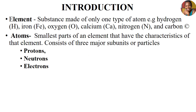The introduction to biochemistry is grounded in basic elements. By elements we mean substances made of only one type of atom, and atoms could be of types such as hydrogen, iron, oxygen, calcium, nitrogen, and carbon. There are different types of elements and they are wide and various.